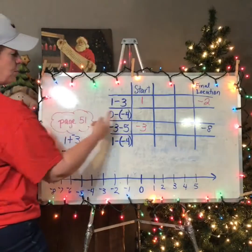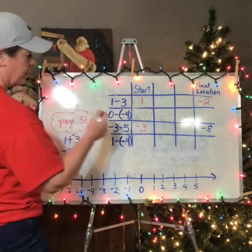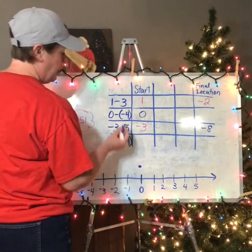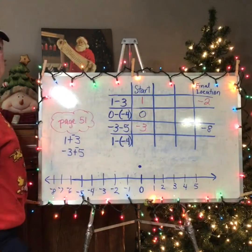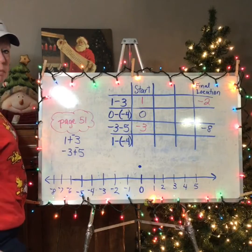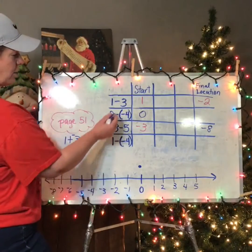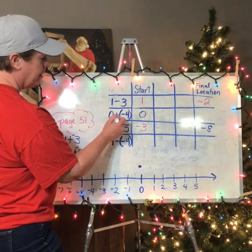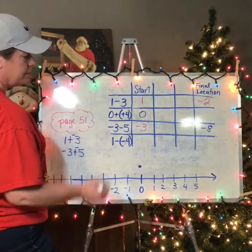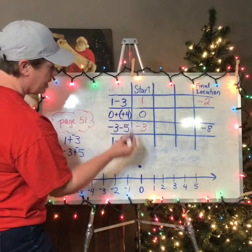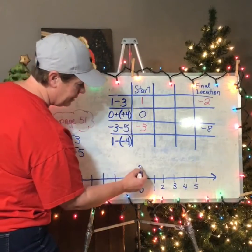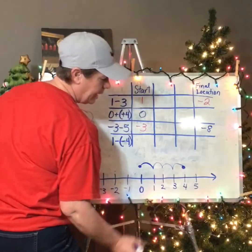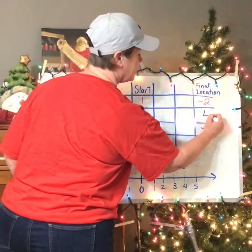Now let's take a look at this one. If I start at zero — I know I'm starting at zero, that's easy — but I don't know what to do with this minus negative four. But if I remember, subtraction is the same as adding the opposite, so I switch this to add the second number opposite. Now it's easy: I start at zero, I add four positives, so I go one, two, three, four, and I end up at four. So my answer is four.